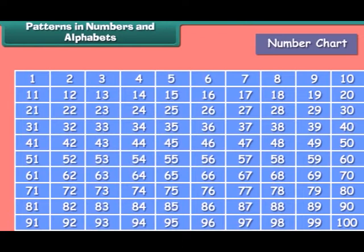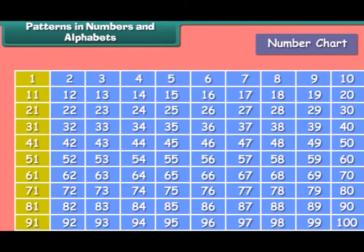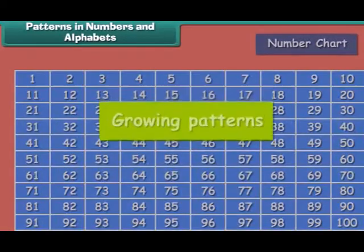Look at the number chart given here. They follow some rule. In rows, the number increases by one. In each column, the number increases by ten, and diagonally the number increases by eleven. They are called growing patterns.